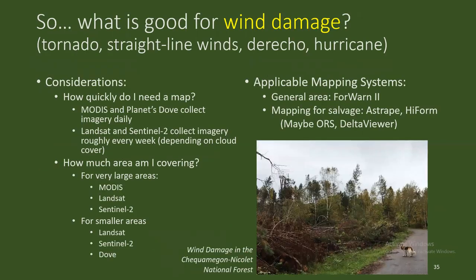Let's go into some situations. Say a tornado rips through your forest and you'd like to know where the damage is and how bad it is. A few things to consider: how quickly do you need a map? Is this for salvage or are you tasked with clearing roads? If you need to clear roads where people are trapped, you're still going to be better off getting somebody up in a plane to look out windows and mark down blocked roads — it's going to be pretty difficult to get satellite imagery turned around in less than a day. But if you're aiming for salvage and recovery, now you've got some satellite-based options. Forewarn will give you the general idea and general area, and Estrapi and Highform can help you get that damage mapped relatively quickly.